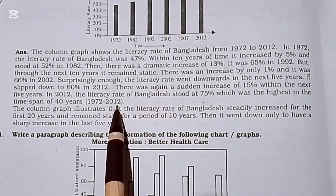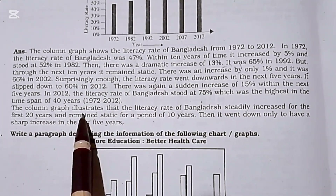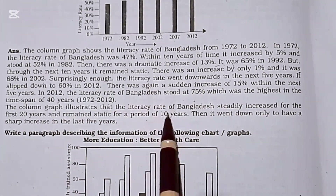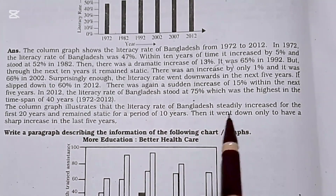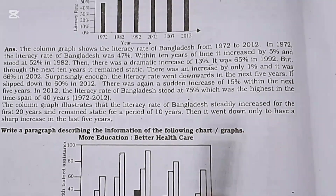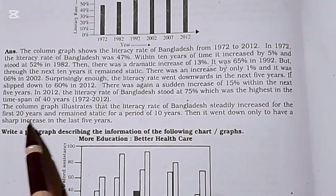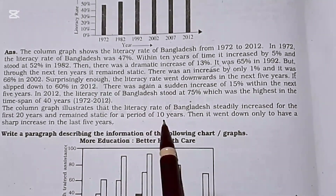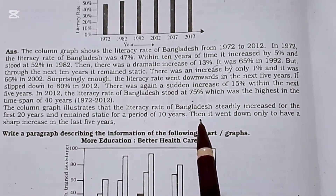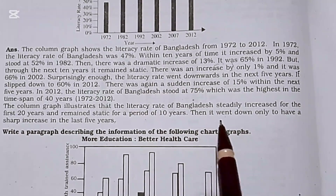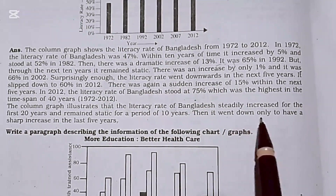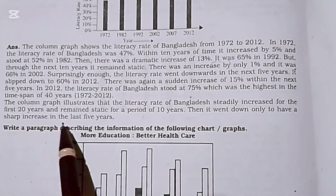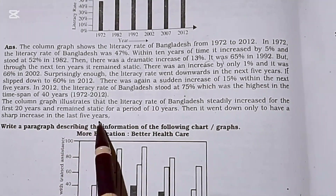The column graph illustrated that the literacy rate of Bangladesh steadily increased for the first 20 years and remained static for a period of 10 years. Then it went down, only to have a sharp increase in the last 5 years.